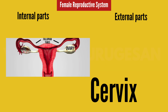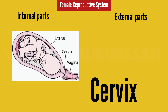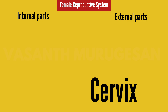Next is the Cervix. The cervix is a continuation of the uterus — it is the lower part of the uterus. When the fetus is completely developed, the cervix region will stretch and dilate to allow delivery. That is the main function of the cervix.